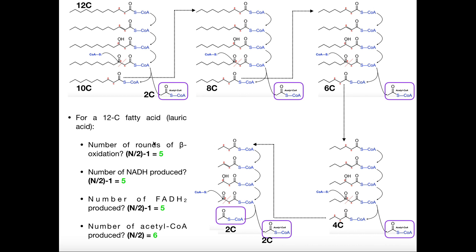For example, with an 18-carbon saturated fatty acid: 18 ÷ 2 = 9, minus 1 = 8 rounds of beta-oxidation. You'd also produce eight NADH's and eight FADH2's. However, from an 18-carbon fatty acid you would get nine acetyl-CoA's, since the number of acetyl-CoA's is always half the number of carbons. Hopefully this process makes sense.